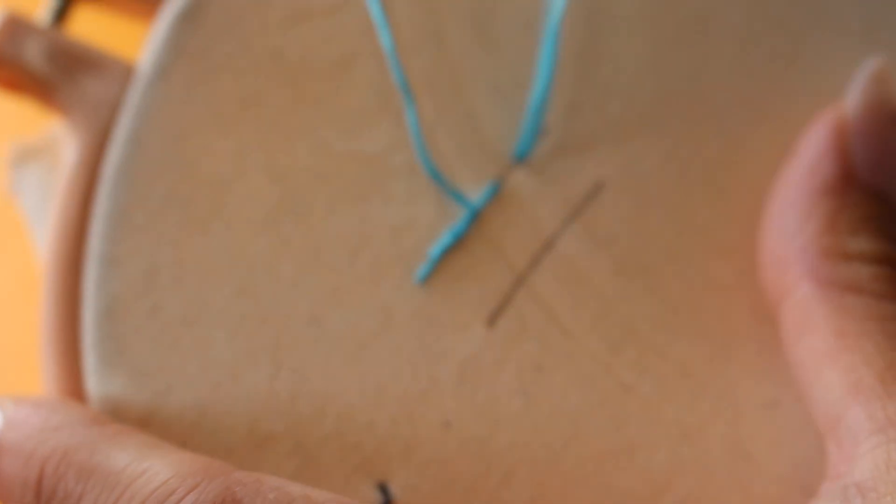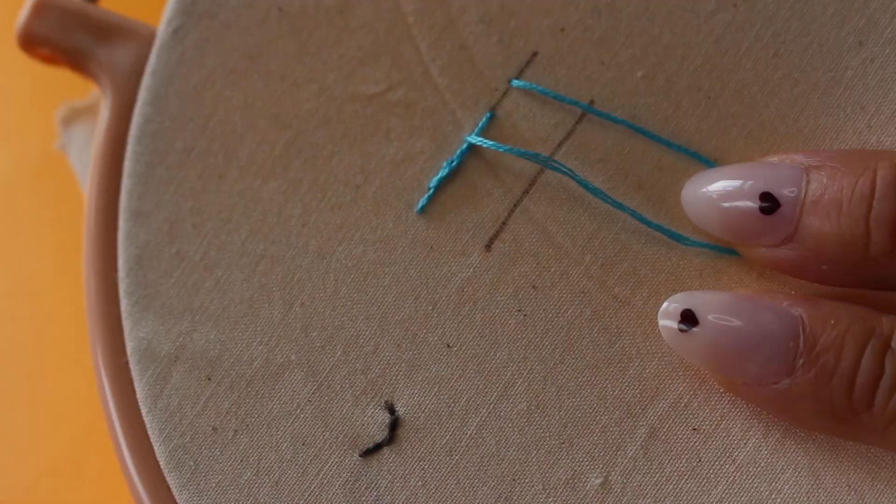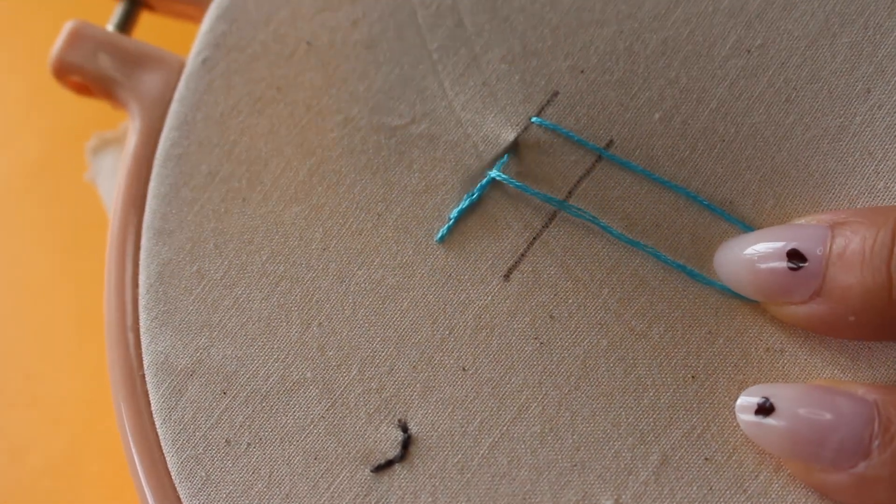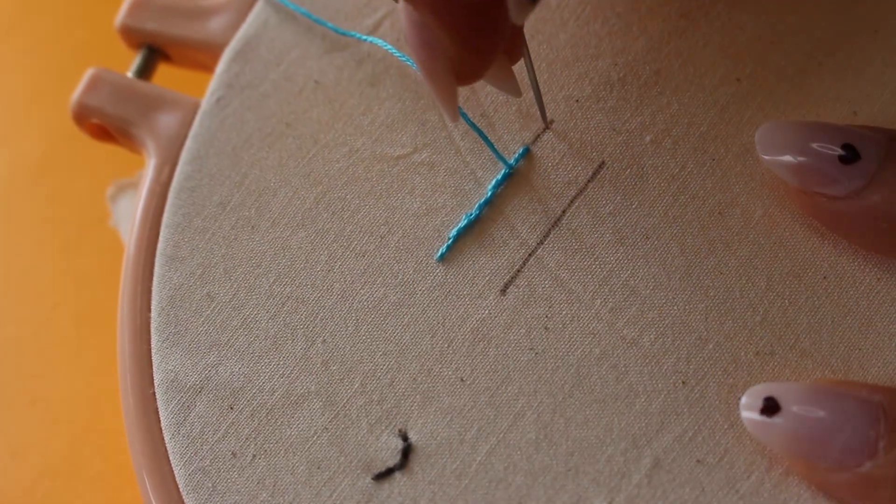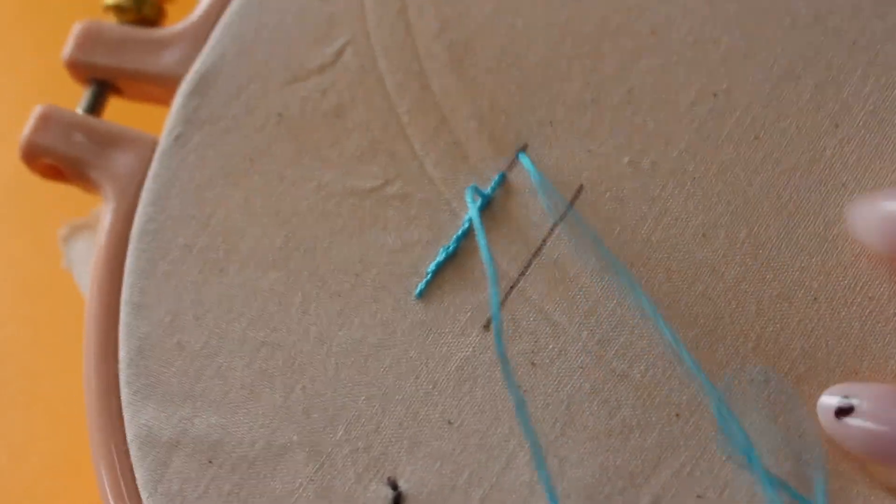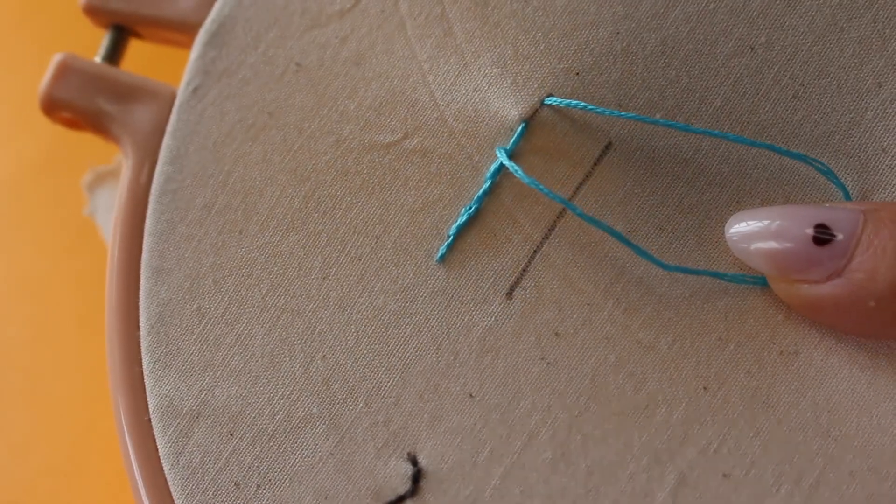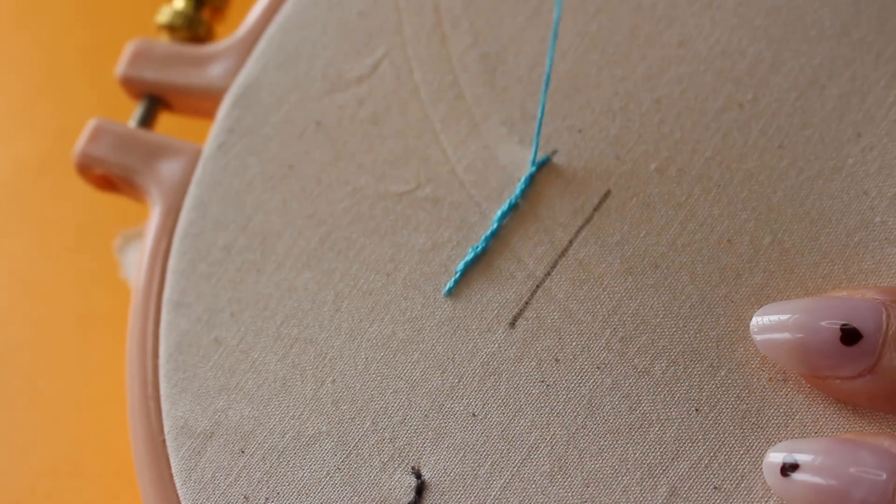Moving forward one stitch length, leaving our loop, and coming in where we ended our previous stitch. Once again, move forward a stitch length away, leave a little loop, enter where you ended your previous stitch, and pull all the way through.